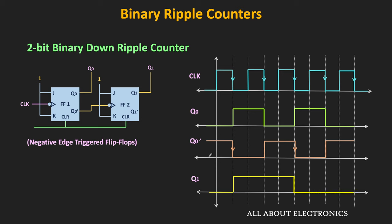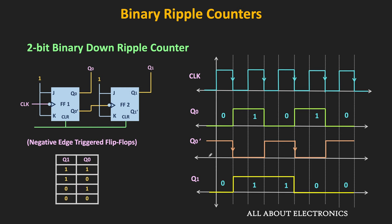If you observe Q1 and Q0 at every falling edge, they change in the downward direction. Initially both are 0; at the next falling edge both become 1; at the second falling edge Q1Q0 becomes 10; then 01; and after the next falling edge the output becomes 00. This 2-bit down counter has 4 different output states and counts from 11 to 00, then returns to 11.